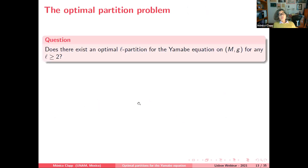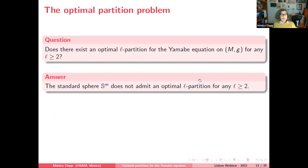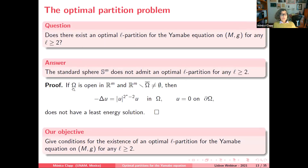The answer is not always yes. For example, the standard sphere does not admit an optimal L-partition for any L ≥ 2. This is because, by the conformal equivalence with R^m, if you take an open set in R^m whose complement has non-empty interior, the Dirichlet problem in Omega does not have a least-energy solution — a well-known fact.